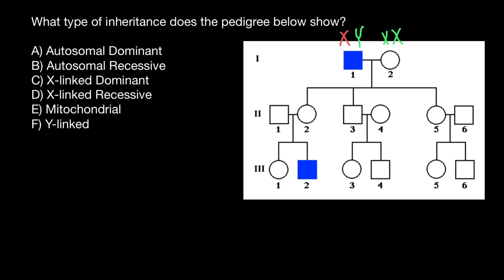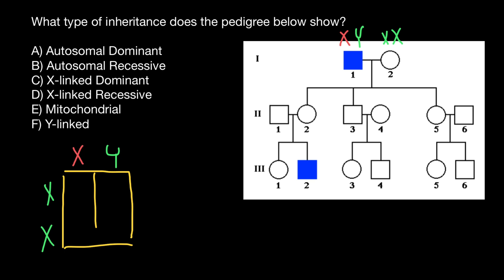So what happens in the F1 generation with the three children? If the male has a defective X chromosome and a normal Y chromosome, and his wife has two normal X chromosomes, if we build a simple Punnett square, the genotypes of the progeny will be as follows: normal X from the mother and defective X from the father; normal X from the mother and Y from the father; and again, normal X from the mother with defective X from the father; and normal X from the mother with normal Y from the father.